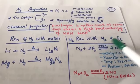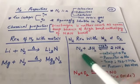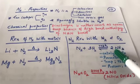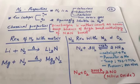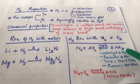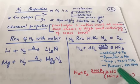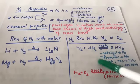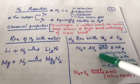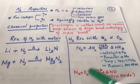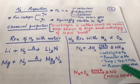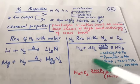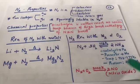Nitrogen also reacts with hydrogen and oxygen. Nitrogen and hydrogen react to form ammonia — this is the Haber process, which is industrially very important. The catalyst is finely divided iron, the promoter is molybdenum, the temperature is 723–777 K, and the pressure is 200 atmospheres. Nitrogen also reacts with oxygen at very high temperatures (2000 K) to form nitric oxide (NO).